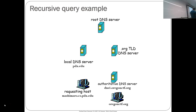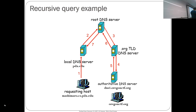Here's an example of a recursive query: if I want to look up OregonCTF.org, I ask my local server, and because it's a recursive query, it recursively queries the root. The root has to hold this connection and send off another connection to the .org TLD. The .org has to send it off to the OregonCTF authoritative server, and finally I get the result back. This builds a bottleneck chain through the root, which is what you don't want.